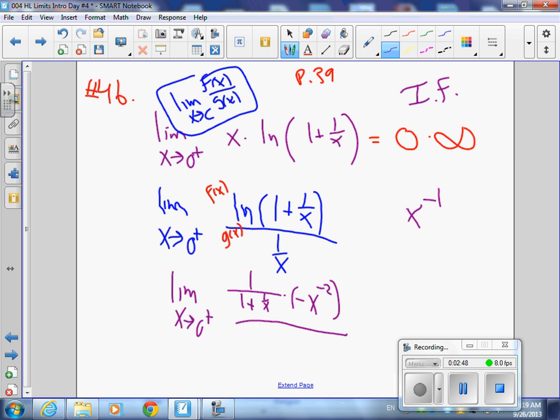And my bottom of this is going to do the same thing. Negative x to negative 2. That's good because what cancels out? These guys cancel out.